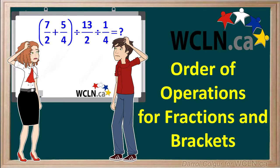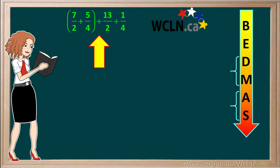Let's go through an example of using order of operations with fractions. This time we'll include one that contains brackets. We have 7 halves plus 5 fourths in brackets divided by 13 halves divided by 1 quarter.